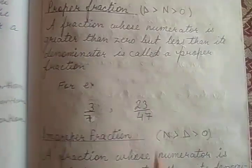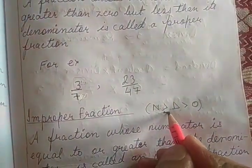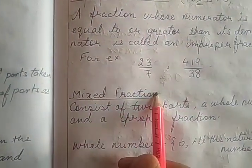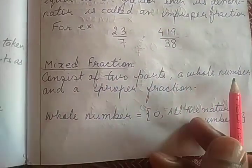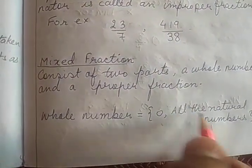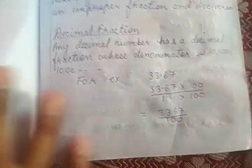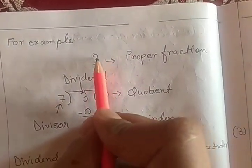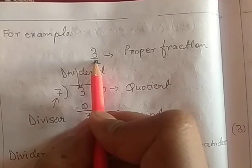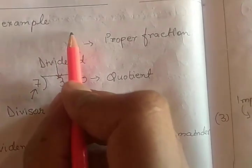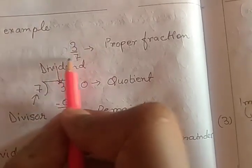Mixed fraction consists of two parts — a whole number and a proper fraction. Whole numbers contain 0 and all natural numbers. If we take a proper fraction where numerator is smaller than the denominator, and if we take 0 as a whole number, it won't affect this — so it is not a mixed fraction.